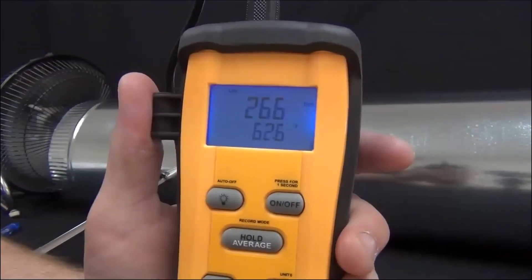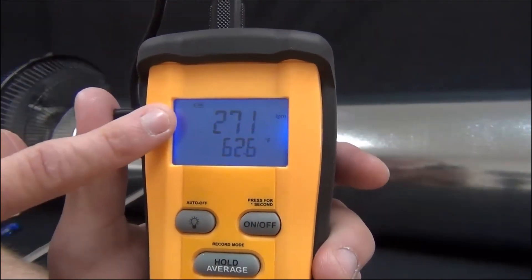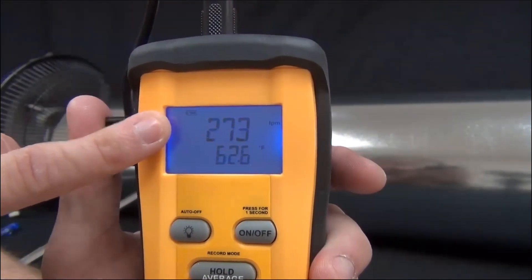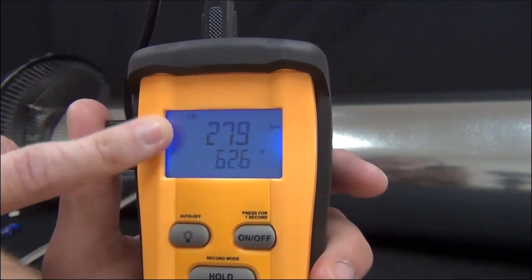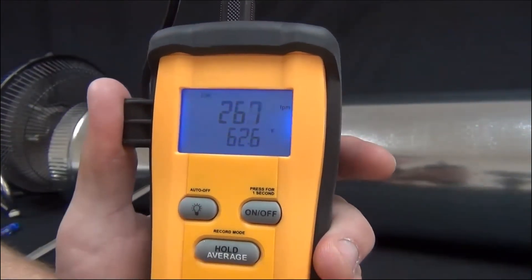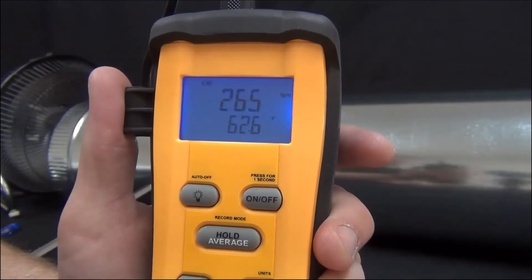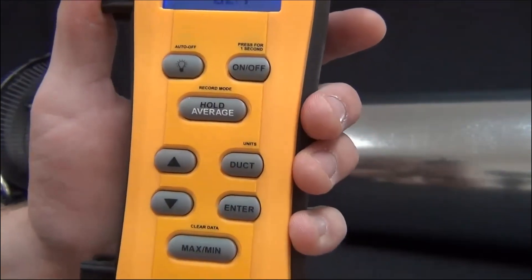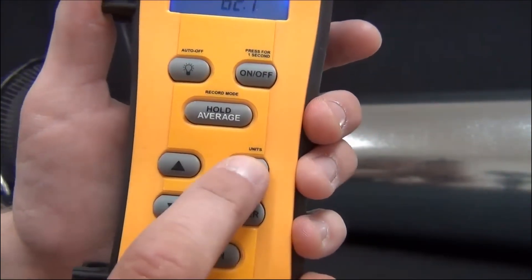So first thing it has is a backlight. You'll notice that right when you turn it on, it'll have the feet per minute and the temperature in the bottom. And depending on what mode you're in, this will change. So first what we have to do to get CFM is enter in a duct size. So what you're going to do is go ahead and press duct.